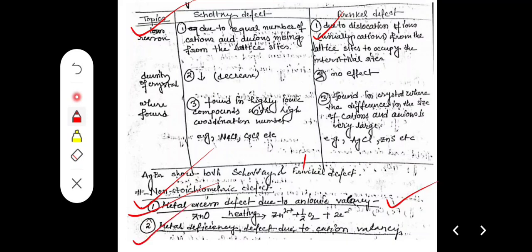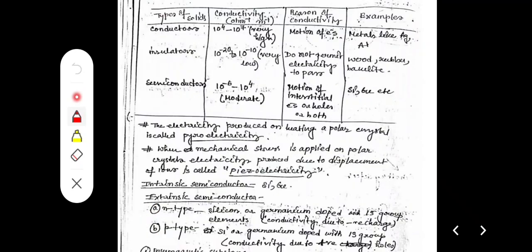Next is metal deficiency defect due to cationic vacancy. Regarding electrical conductivity, there are three defined types. First: conductors, which can conduct electricity. Their conductivity value is very large — 10⁴ to 10⁷ ohm⁻¹ m⁻¹ — due to the motion of electrons. Examples are metals like Ag and Au.